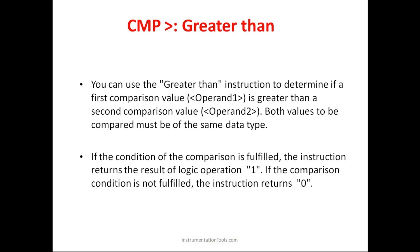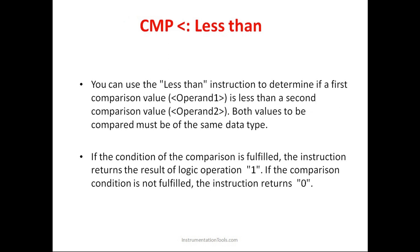Whenever we are comparing two values and one value is greater than another value, the output will be in the high state — that is the greater than instruction. Similarly, for less than, when the first value is less than the other value, the output will be in the high state. We will be seeing both instructions in today's lecture.